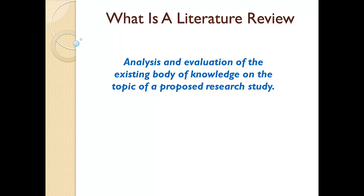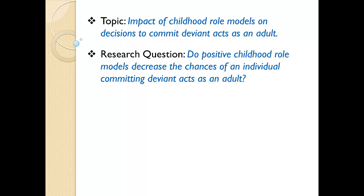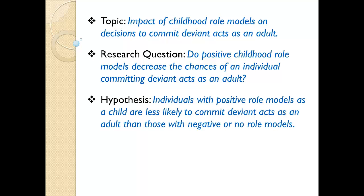Bear with me for a moment and I'll explain why these are also important. The topic of our example research study will be the impact of childhood role models on decisions to commit deviant acts as an adult. Our research question will be: do positive childhood role models decrease the chances of an individual committing deviant acts as an adult? And our hypothesis will be individuals with positive role models as a child are less likely to commit deviant acts as an adult than those with negative or no role models.